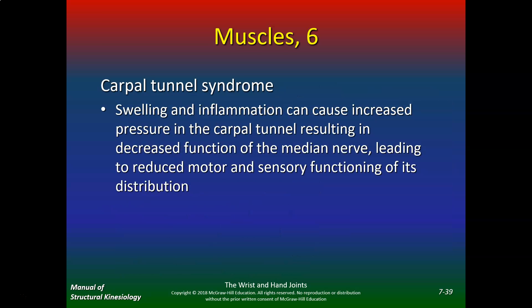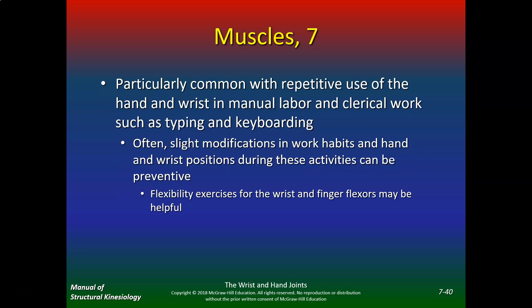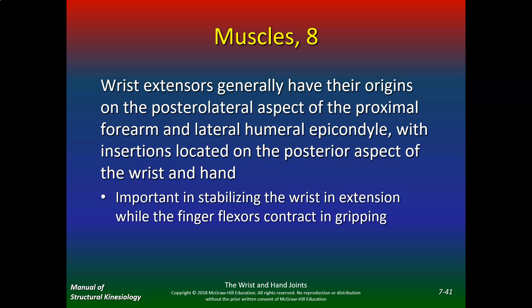Carpal tunnel syndrome: swelling and inflammation can cause increased pressure in the carpal tunnel, resulting in decreased function of the median nerve, leading to reduced motor and sensory function. Very common with repetitive use of hand and wrist — manual labor, clerical work, data entry, typing, and keyboarding. Slight modifications in work habits and wrist positions can be preventative, and flexibility exercises for wrist and finger flexors may help.